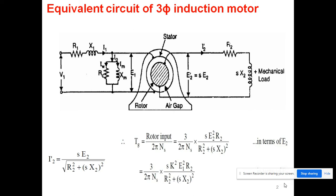To discuss the torque-slip characteristics, we need to know the formula of torque. The mathematical derivation is not part of our syllabus but we will use this formula, and I will discuss how this formula comes about in this slide. In the first slide, you see the equivalent circuit — because we treat the induction motor just like a transformer, where the stator is the primary coil and the rotor is the secondary coil, with an air gap between them.